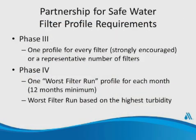Partnership for Safe Water filter profile requirements are as follows. For phase three, we want you to do one profile for every filter or a representative number of filters. For phase four, it's more arduous: there's one worst filter run profile for each month, as we just showed, and you want to do those for at least 12 months minimum. The worst filter run is based on the highest turbidity.